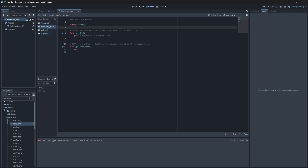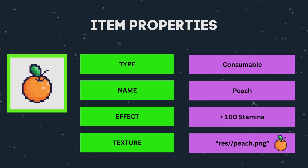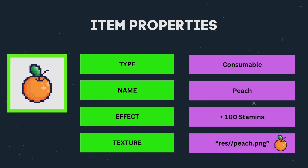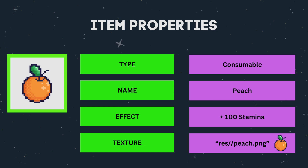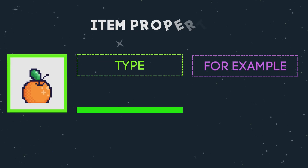Now, at the top of our inventory item script, we'll need to define our item properties. Our properties will be the item's type, name, effect, and texture. These properties are what makes up the item, so you can add more properties if you want. For example, you can give it a weight, a scale, or any other property that you want your item to have in your inventory to separate it or make it unique from other items. Before we actually code these properties, I just want to explain the four properties that we are going to add.